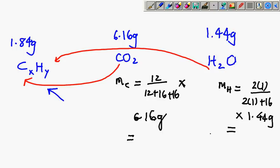So 12 over 44 times 6.16 gives you 1.68 grams. And then the other one is 2 over 18 times 1.44, so you get 0.16 grams. Now we have the mass of carbon and mass of hydrogen. We should put them together in this format.